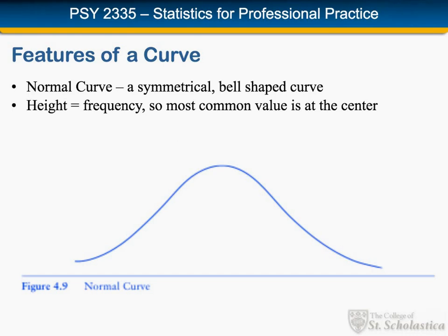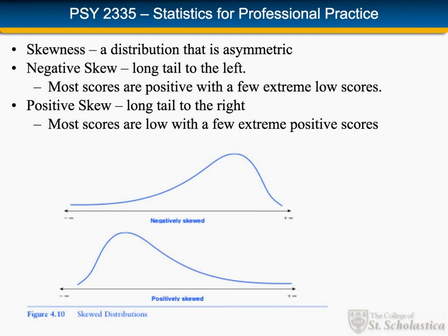We often want to describe the shape of a curve or distribution, comparing it to a normal curve. A normal curve is symmetric — the left and right sides are mirror images. The height of the graph tells us frequency, so in a normal curve the greatest number of people are in the center, with smaller and smaller numbers out to the tails. When a graph is not symmetric, we say it's skewed, and we name the skew by the direction of the extreme values or tail. In a negative skew, most scores are high with a few extreme scores on the lower left.